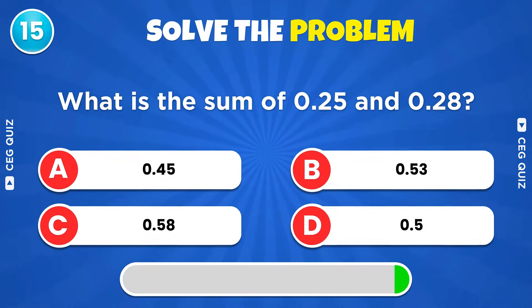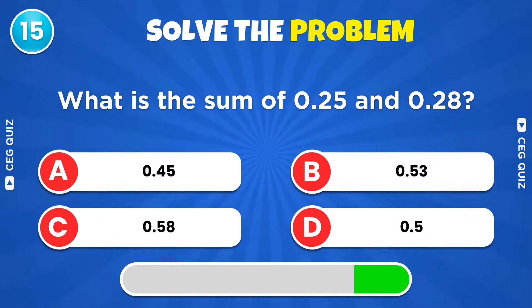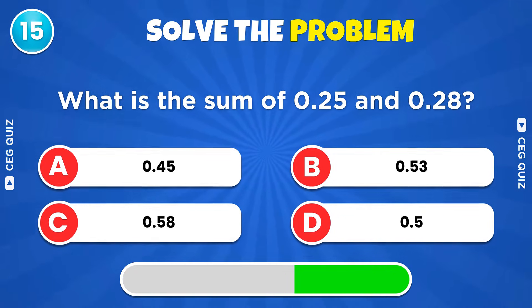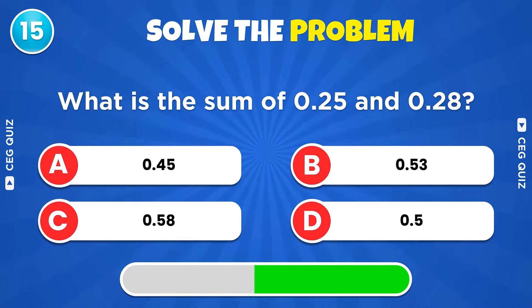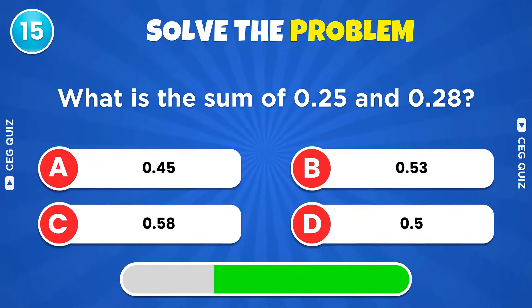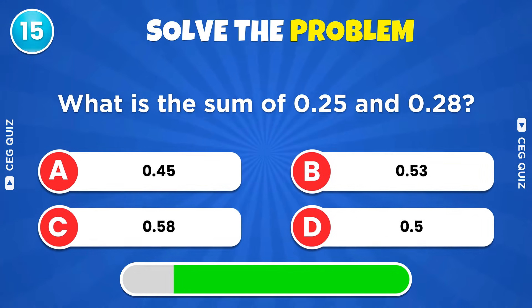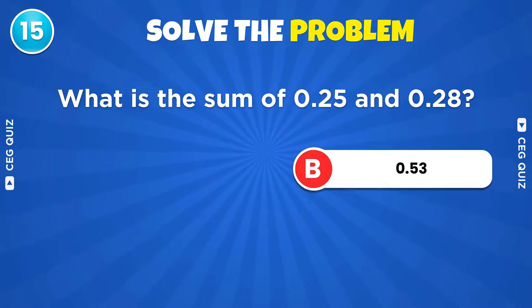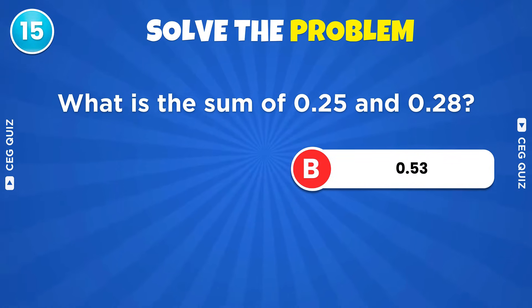What is the sum of 0.25 and 0.28? The sum is 0.53.